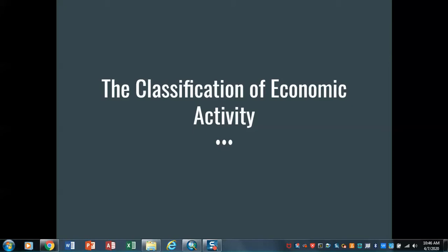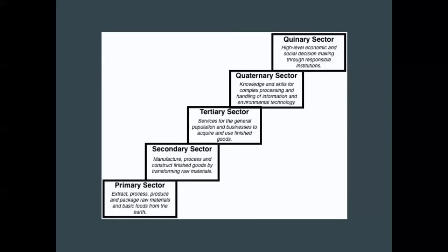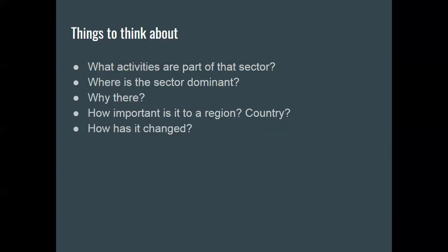What this really means is that we're going to look at parts of the economy — things that people do. All economies are dramatically interrelated, so to pull these out in pieces is a little bit artificial, but we want to understand why and where. We're going to talk about the primary sector, secondary sector, and then the tertiary sector, and we often include within the tertiary sector the quaternary and quinary sectors. As we go through this, I want you to think about what activities are part of each sector, where those sectors are dominant and why, how important they are to a given region or country, and how that's changed over space and time.